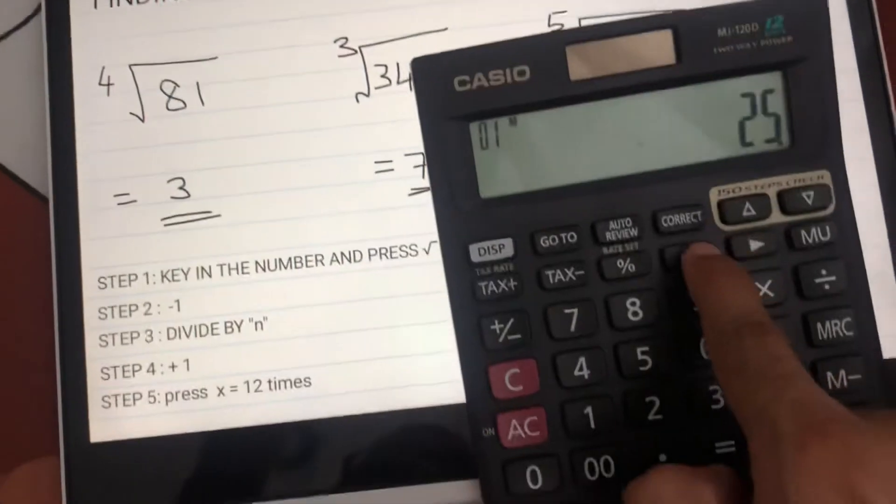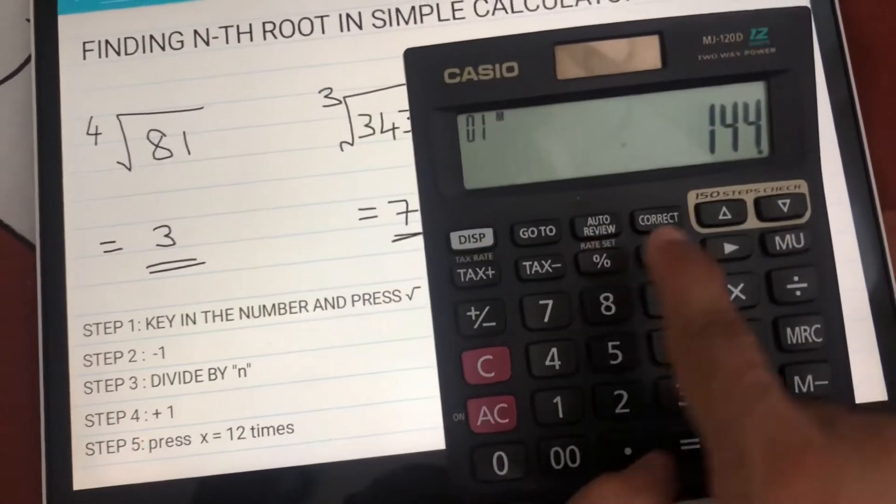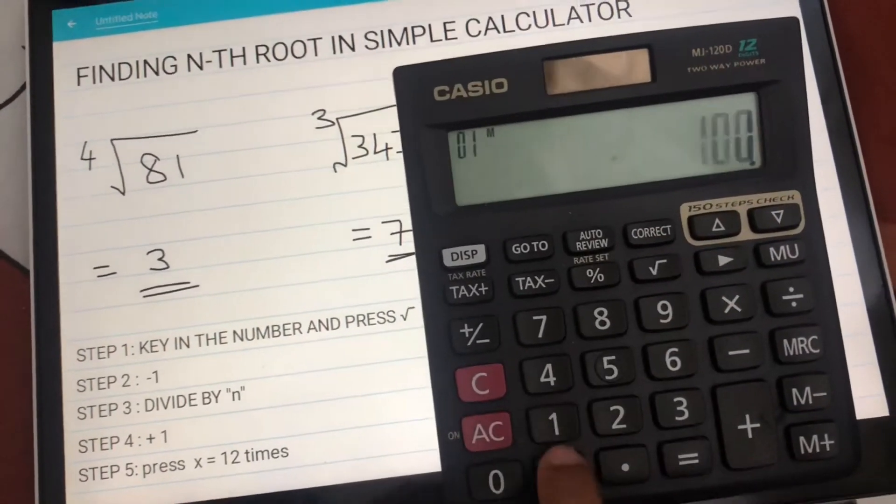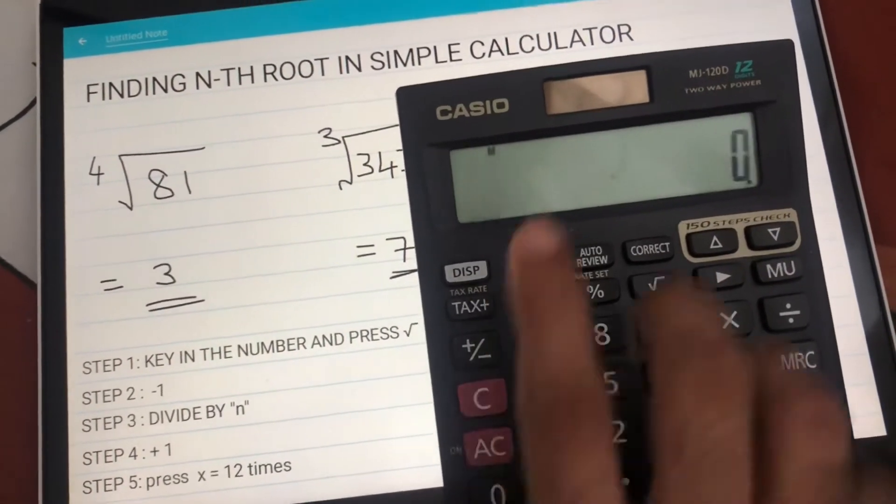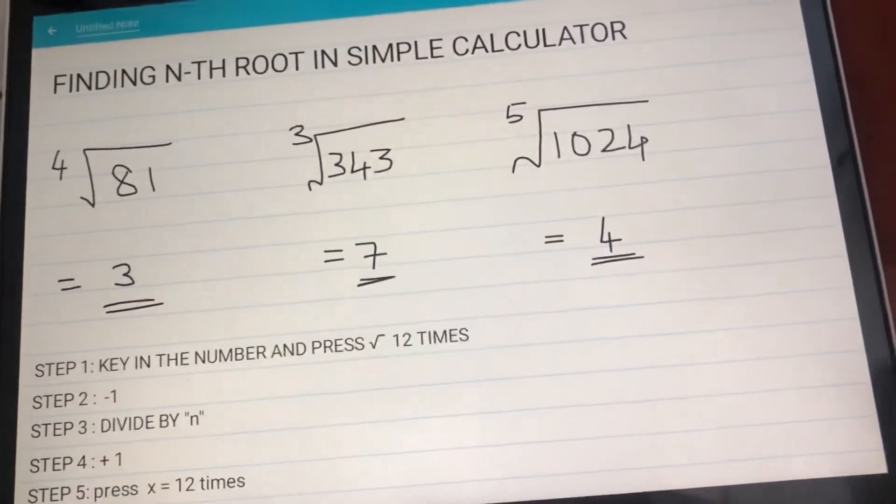25 square root - you just press the square root symbol, you get the answer. If it is 144, you press the square root symbol, you get 12. 100, you press square root, you get 10. But what about fourth root of 81, cube root of 343?